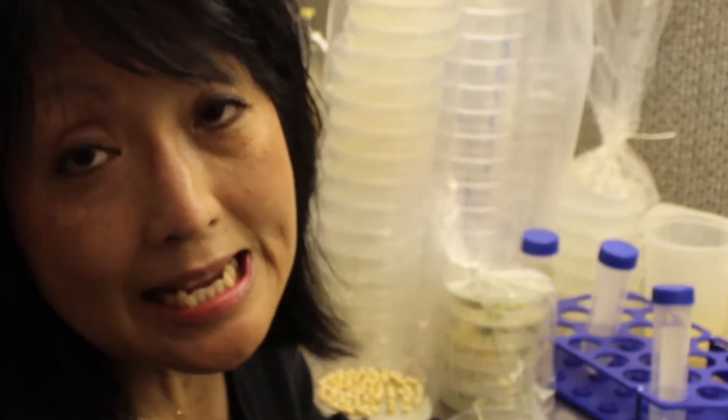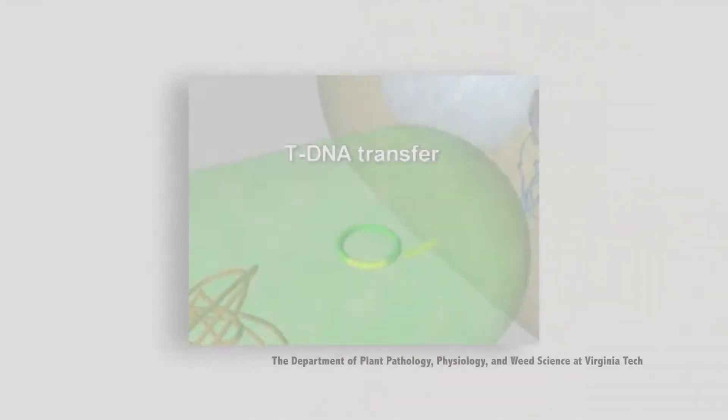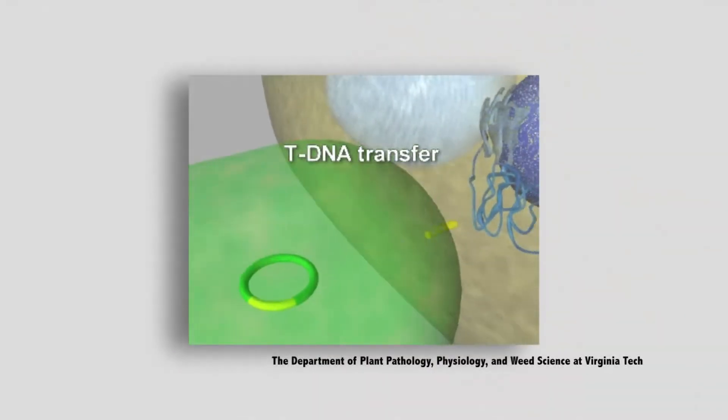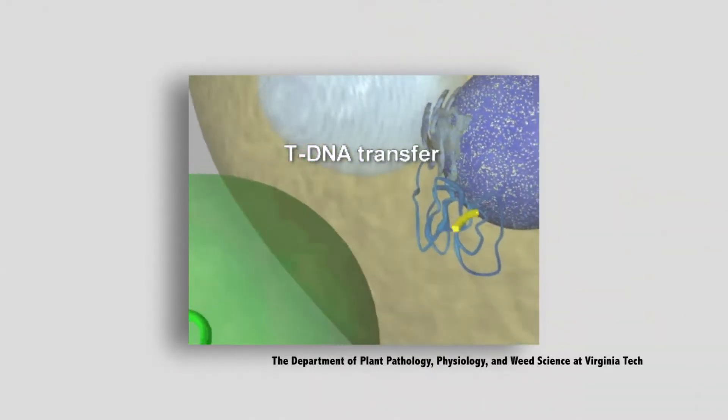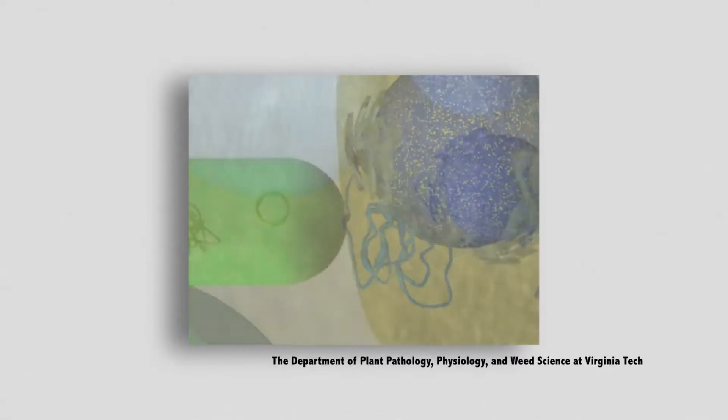We allow these cotyledons to remain on these co-culture plates for three days. During those three days, the agrobacteria is going to do its thing — it's going to insert its little piece of DNA into the plant cell.